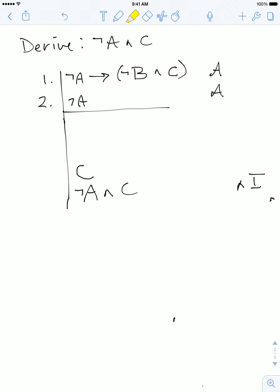So if the sentence before C was ¬B ∧ C, then I could simply in one step eliminate the ∧ and write down the C.